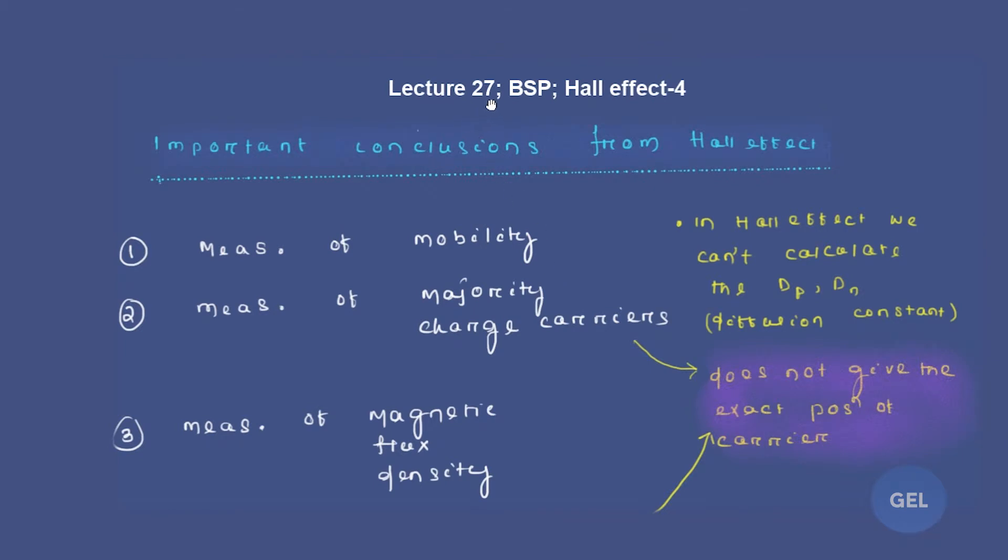Hi, welcome to lecture number 27 of EDC. We're still in the first module BSP, that is Basic Semiconductor Physics. This is the fourth lecture video of Hall effect, and in this lecture video we are going to discuss a couple of important conclusions from Hall effect.